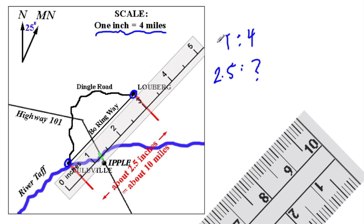Really what we're doing here is we have 2 and a half times larger than 1, so we take 4, multiply it by 2 and a half, and we get 10 miles.